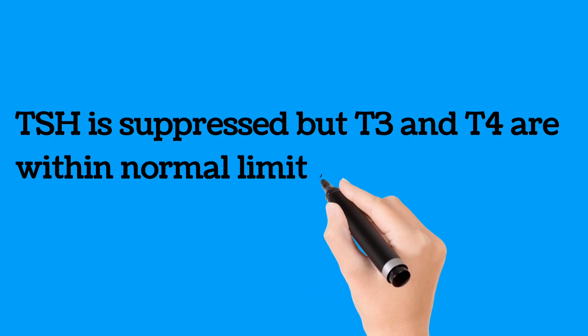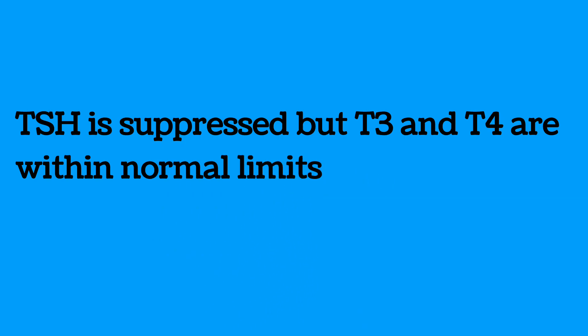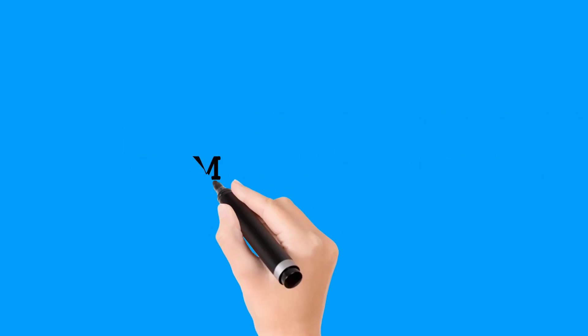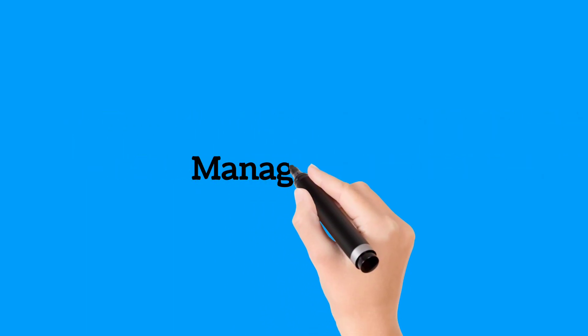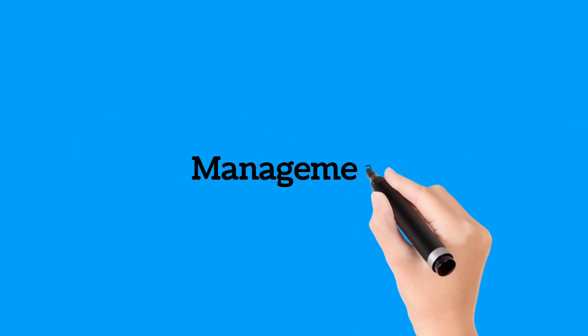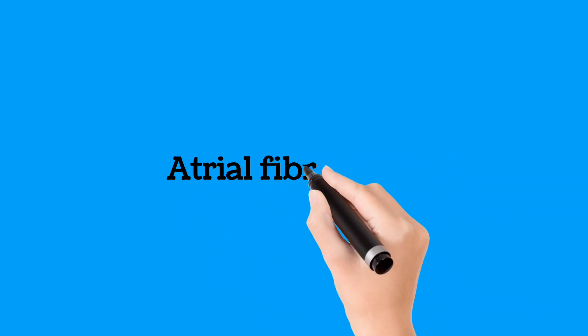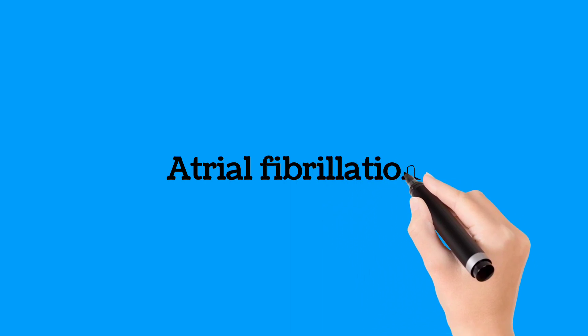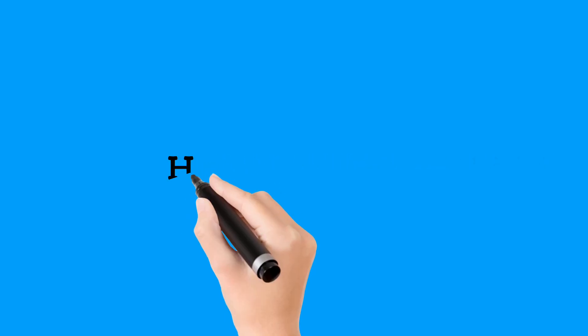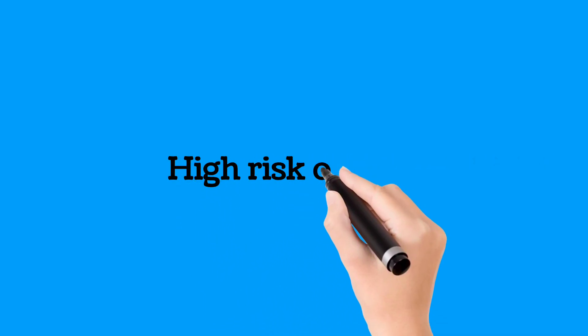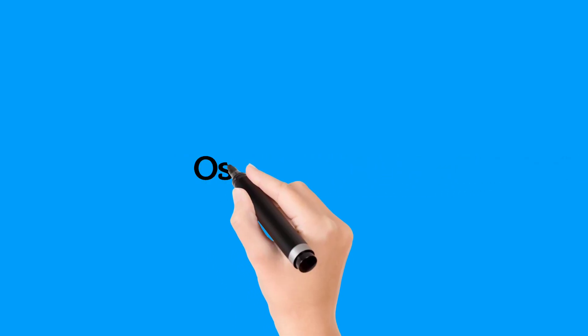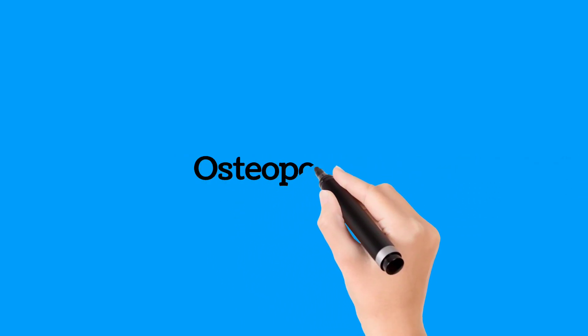So how do we manage it — should we be treating it or observing it? We will be treating it if there is atrial fibrillation, or if the patient is having a higher risk of cardiovascular disease, such as multiple risk factors for cardiovascular disease.